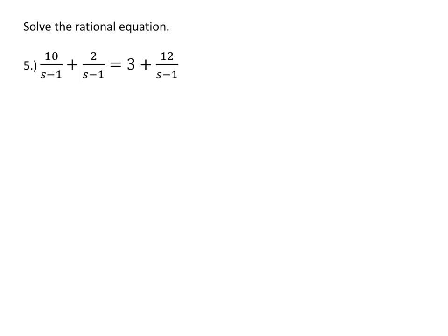To solve this rational equation, let's multiply the entire equation by the least common denominator and then that will clear out the denominators. So if we look at our denominators, we already have the least common one very clearly, it's going to be s minus 1.